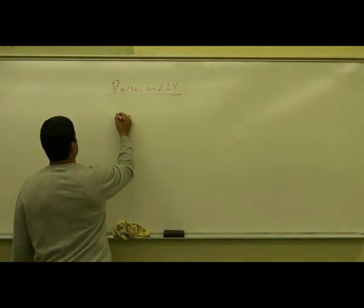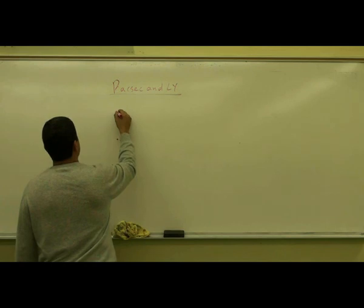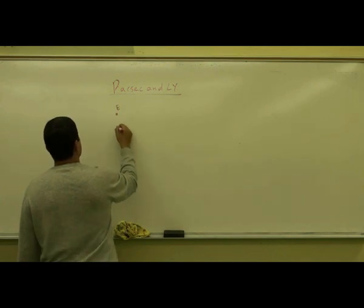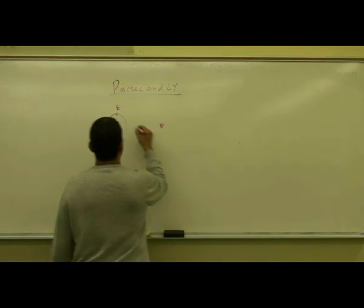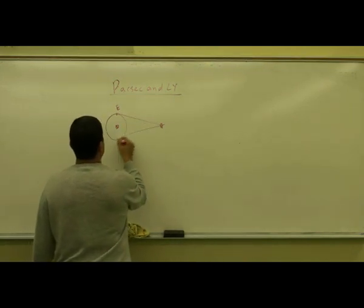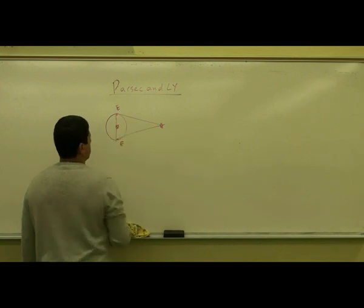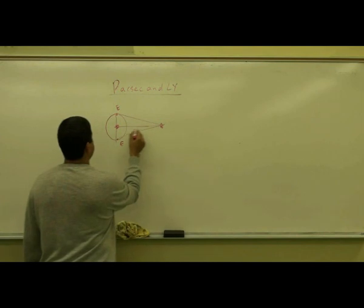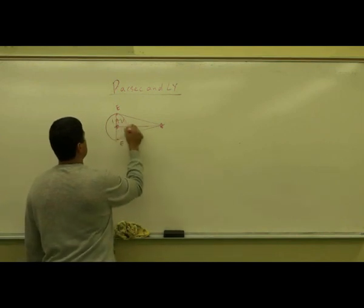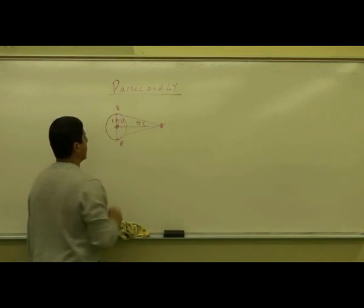So we can use that concept for a star. Imagine this is the earth, here's the sun, and then we look at a particular star. You can make a triangle like that and you can split this triangle in half. This is one AU, this is known as the parallax angle.